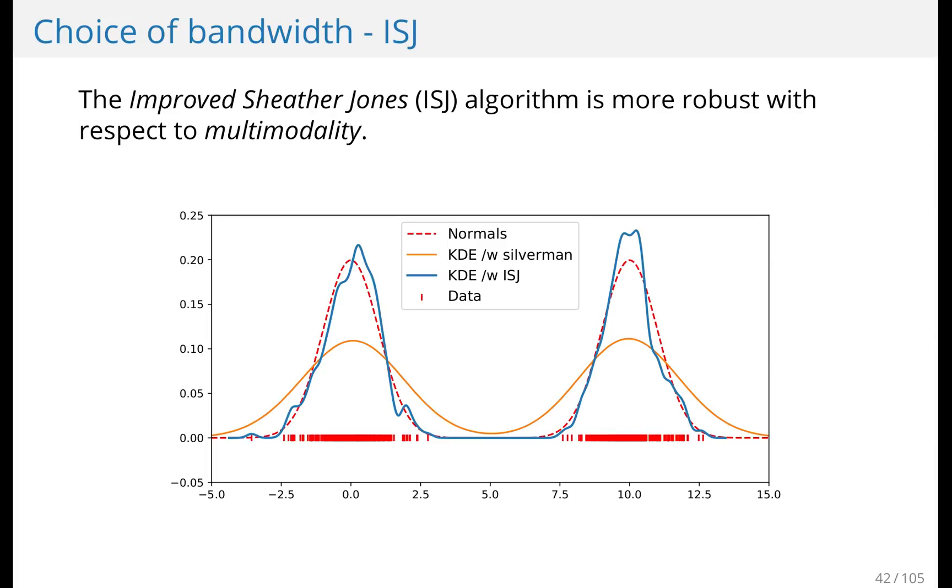We do need quite a bit of data to make the improved Sheather Jones algorithm do a good job. So that's one disadvantage. But if you suspect something that's far from normal, or something that's bimodal, then this algorithm does a good job.